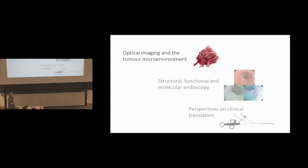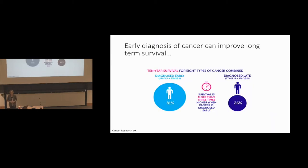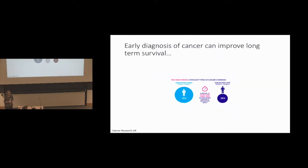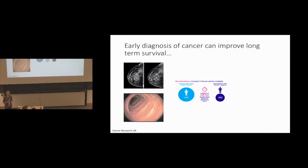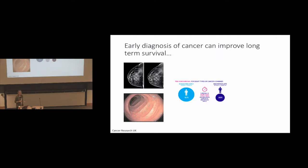Let's start off with cancer and why we're interested in looking at the tumor microenvironment. Within my program, I'm particularly interested in trying to improve early diagnosis of cancer. As you can see from this schematic, you get a much higher survival when cancer is diagnosed early — on the order of about three times higher across most cancer types. When we think about trying to screen for cancer, we do use a lot of imaging techniques, such as mammography and colorectal screening, where we're not really being selective with the patients — we're just going for an age-related demographic.